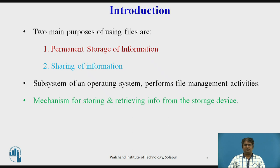In a computer system, a file is a named object that comes into existence by explicit creation, which is insusceptible to temporary failures in the system and persists until explicitly destroyed. The two main purposes of using files are permanent storage of information, achieved by storing a file on a secondary storage medium such as a magnetic disk, and sharing of information — files provide a natural and easy means of sharing, where a file created by one application can be shared with different applications after some time.